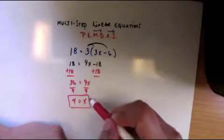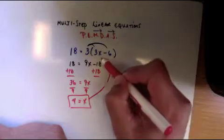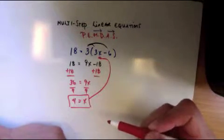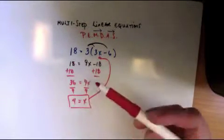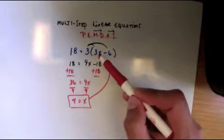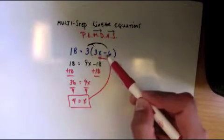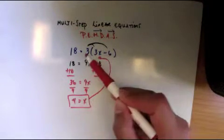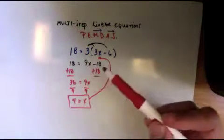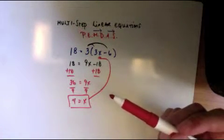Now what I tell my students is always take this, plug it back in there, and just quickly verify if it gives you 18. 3 times 4 is 12, 12 minus 6 is 6, 6 times 3 is 18. Yes it is, so it checks off.